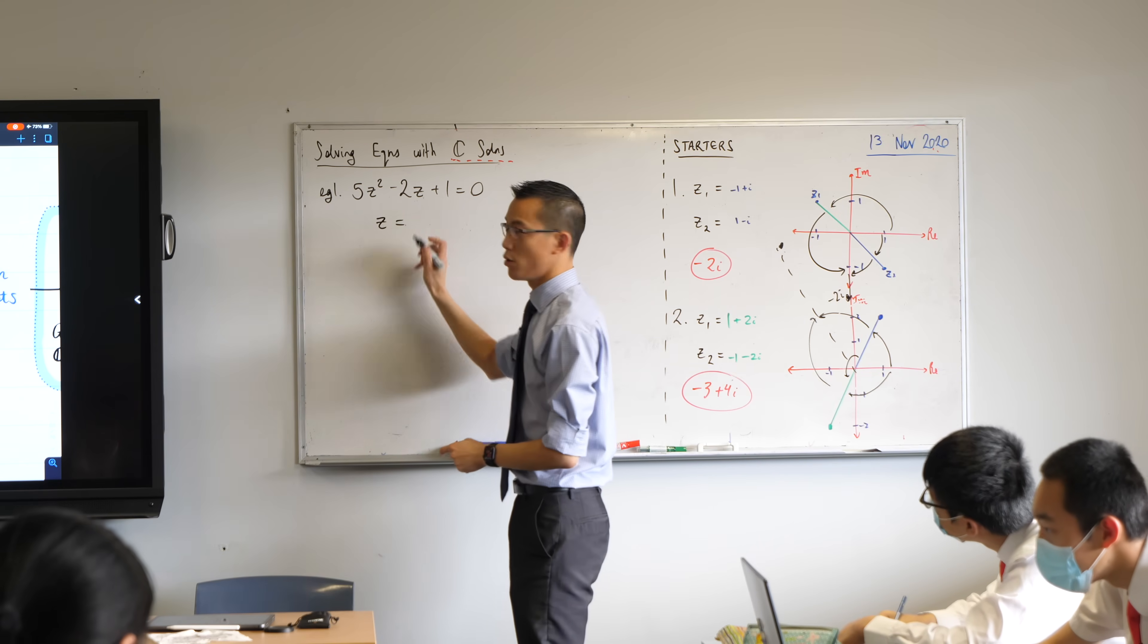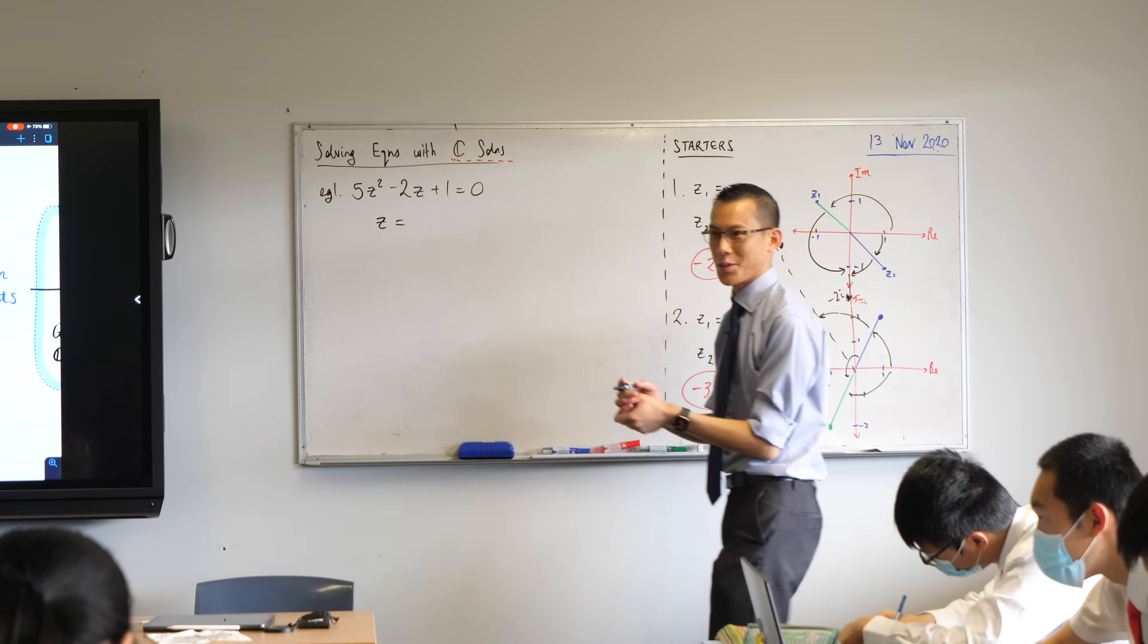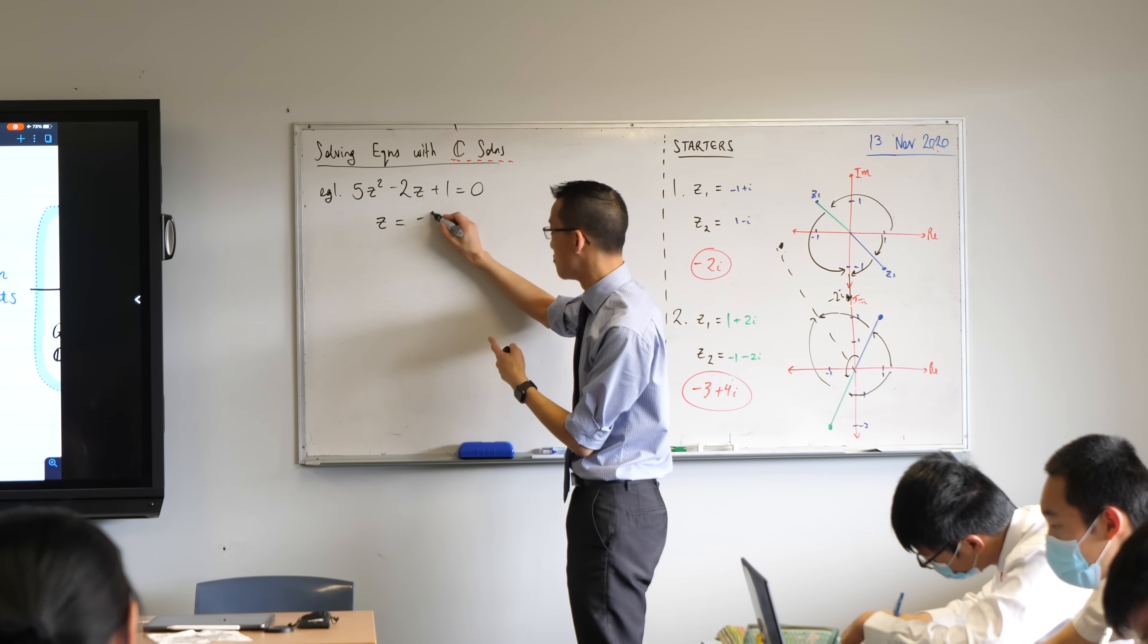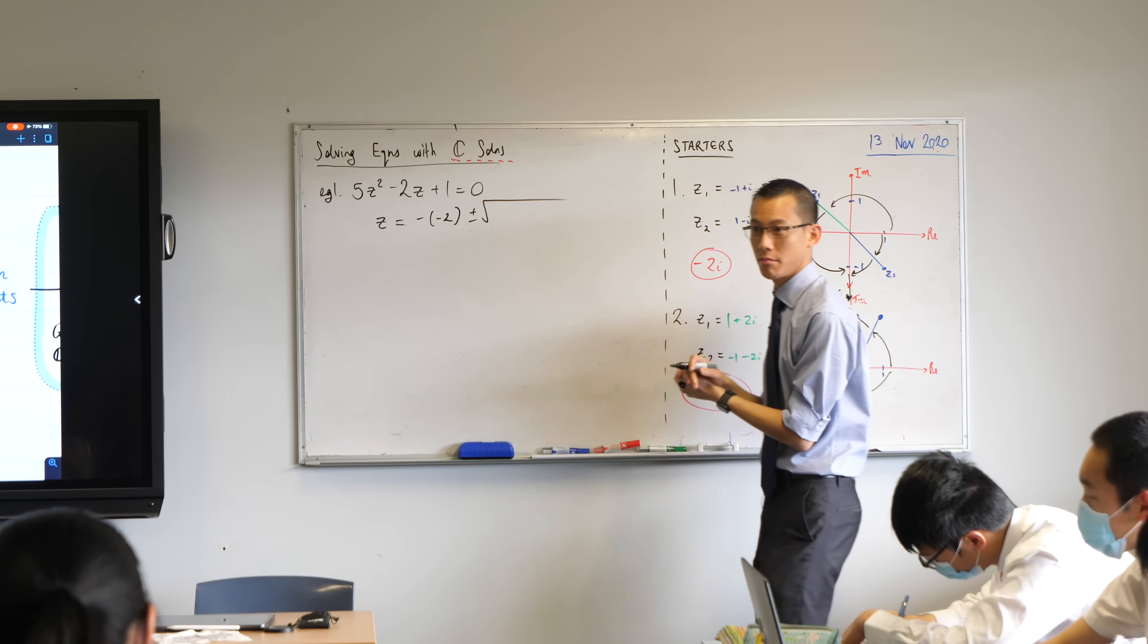So I'm going to start you off and then I'm going to let you loose. The quadratic formula, we know this pretty well, right? What are we going to start with? Minus b, which in this case is negative 2, right? Plus or minus square root of, okay, what's coming underneath here?